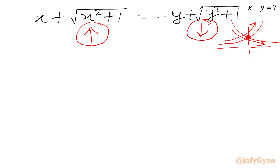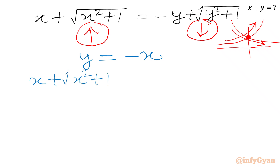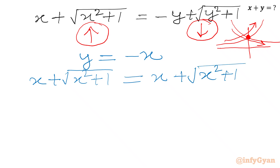Now I will check at y equals minus x. Plugging in: LHS is x plus square root of (x squared plus 1). For RHS, applying y equals minus x gives minus of (minus x) plus square root of (x squared plus 1), which equals x plus square root of (x squared plus 1). So equality holds true, and we conclude y equals minus x is the only solution.